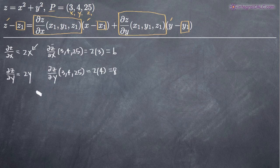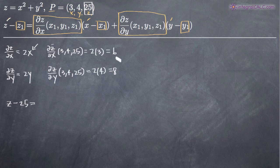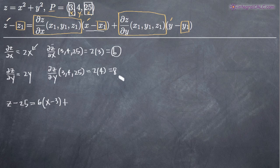Given that, we can now plug all of this information into our tangent plane formula. We get z minus z sub 1, where z sub 1 comes straight from our point P, so z minus 25. The partial derivative with respect to x at point P was 6, so we get 6 times (x minus x sub 1), which is x minus 3. The partial derivative with respect to y at point P was 8, so we get 8 times (y minus y sub 1), which is y minus 4.